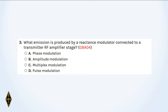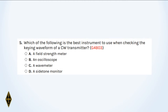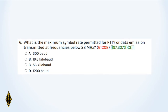Number four: How many states does a three-bit binary counter have? Number five: Which of the following is the best instrument to use when checking the keying waveform of a CW transmitter? Number six: What is the maximum symbol rate permitted for RTTY or data emission transmitted at frequencies below 28 megahertz?